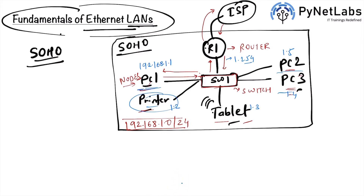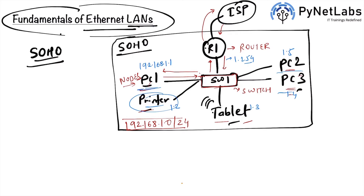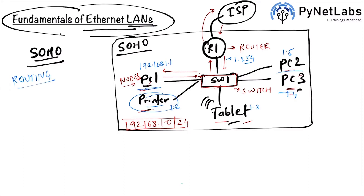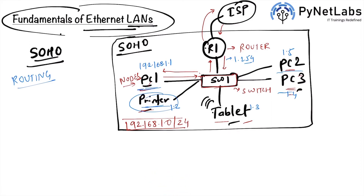There are also scenarios where you have a shared printer for different networks across floors. In that case, you can use advanced concepts like routing to send print requests from different networks to a common printer. We'll be dealing with that soon. You can also extend a SOHO network by connecting a wireless access point, which is an additional device in the setup.